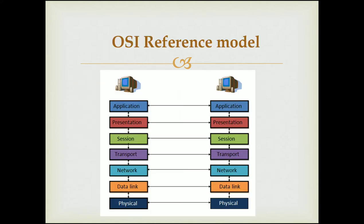The seven layers of the OSI model are: Application layer, Presentation layer, Session layer, Transport layer, Network layer, Data Link layer, and Physical layer. The most common question asked on this topic is to draw and explain the OSI reference model and explain the function of each layer in detail. To answer this, it is necessary to study about the seven layers.